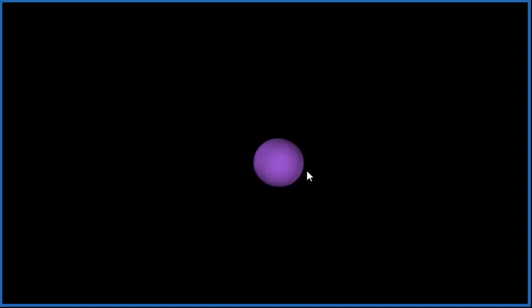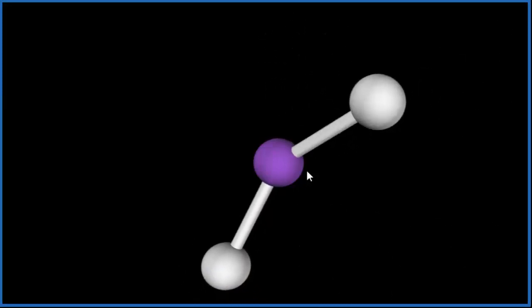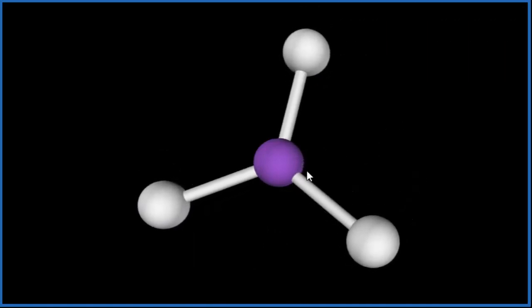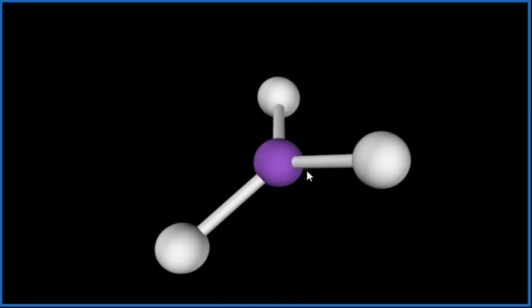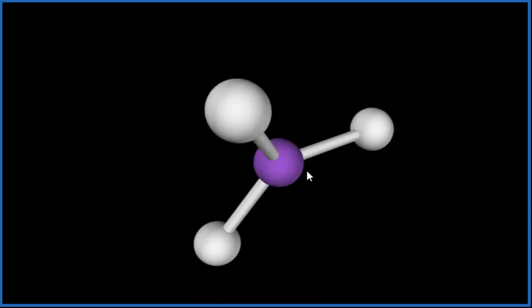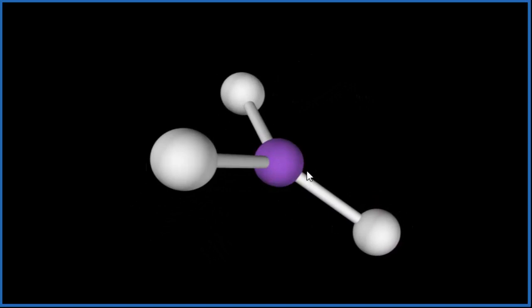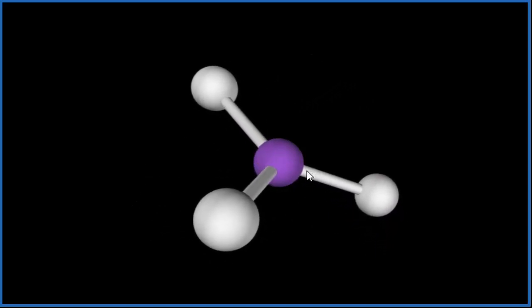So you can imagine the purple, that's the aluminum. We add one fluorine, two fluorines, they push away, so they're as far away as they can be. We add the third one, and we end up with this trigonal planar. So you can see it's all in one plane here. There are no lone pairs, so this is the molecular geometry, and it's also the electron geometry.